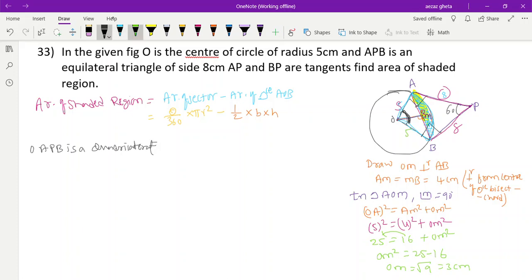Sum of angles of a quadrilateral is 360 degrees. Angle O plus angle A plus angle P plus angle B equals 360. Angle A is 90, radius perpendicular to tangent. Angle P is 60, equilateral triangle. Angle B is 90, radius perpendicular to tangent. So angle O plus 90 plus 60 plus 90 equals 360. Angle O equals 120 degrees.